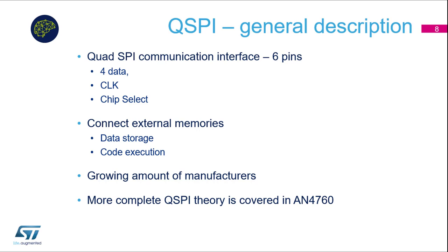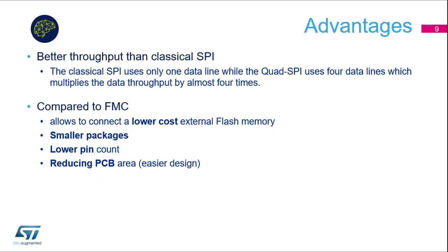Additionally, the number of manufacturers is growing and external memories are used more often. More complete theory about Quad SPI is covered in application note AN4760. An advantage is better throughput compared to classical SPI, which makes sense since classical SPI uses only one data line.